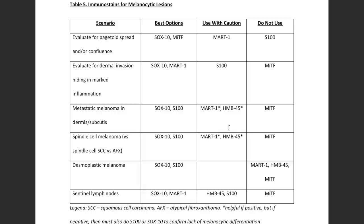Mart1 or HMB45 could also be used for metastatic melanoma, but if Mart1 is positive and you think it looks like metastatic melanoma, that's probably fine. However, Mart1 is sometimes negative in melanoma — particularly big metastatic nodules tend to lose Mart1 and HMB45 — but they more often still retain Sox10 or S100. So if you use Mart1 or HMB45 and they're positive, great, but if they're negative, you need a second round of stains with S100 or Sox10.